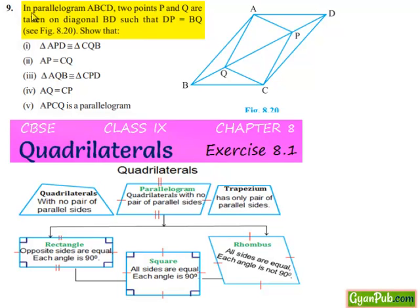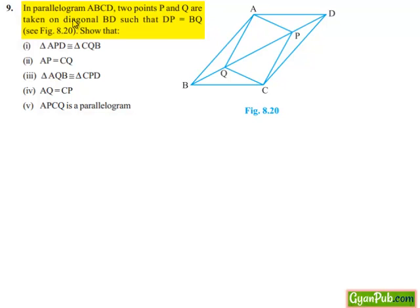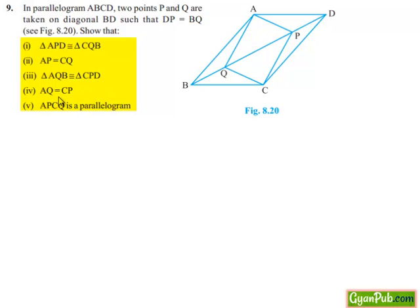Moving on to the 9th question. In parallelogram ABCD, two points P and Q are taken on diagonal BD such that DP is equal to BQ. Show that: first, triangle APD is congruent to triangle CQB; second, AP is equal to CQ; third, triangle AQB is congruent to triangle CPD; fourth, AQ is equal to CP; and lastly, APCQ is a parallelogram.